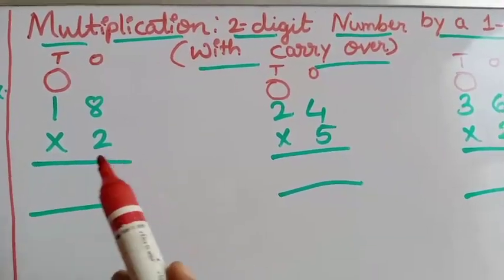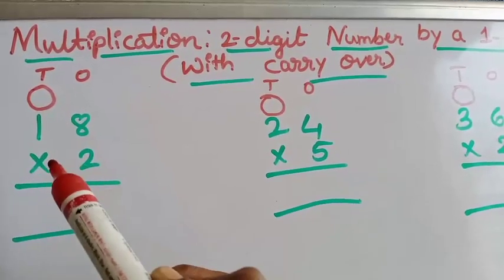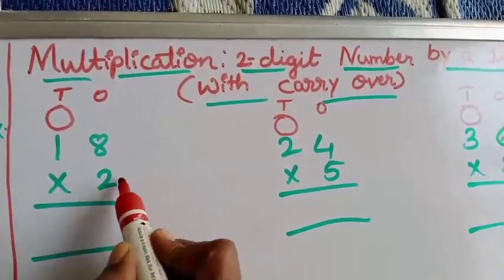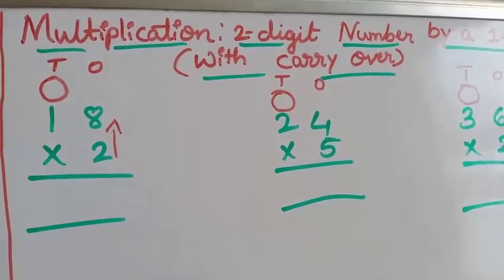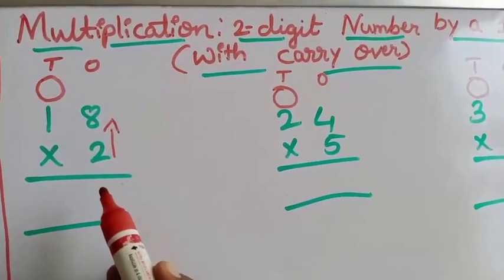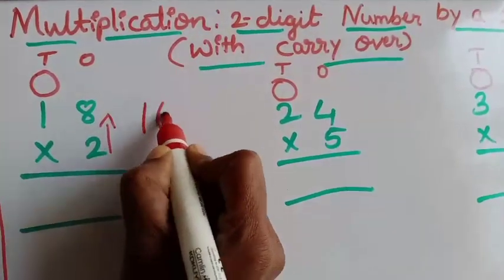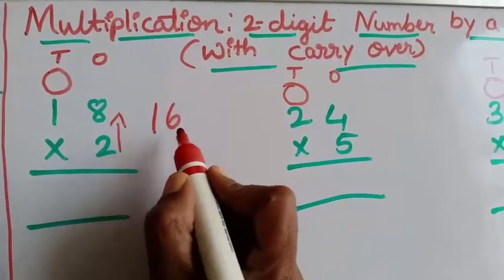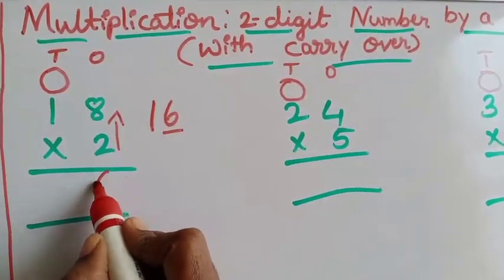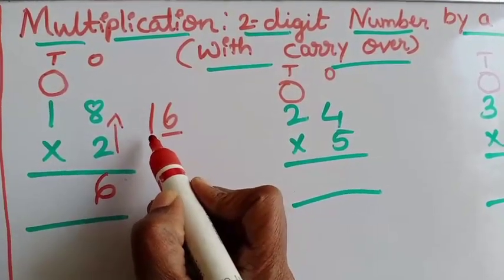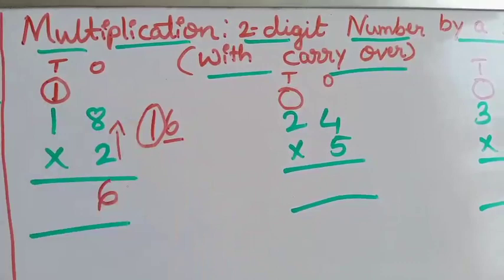The first example is 18 into 2. The first step is we have to write the ones place and tens place. After that we have to put the arrow mark — same method. So look carefully children and follow me. 2 eights are how much children? 2 eights are 16. In the previous class we were writing here directly, but here we got a two-digit answer. We got 16, which is a two-digit number. So we have to write the answer to the side.